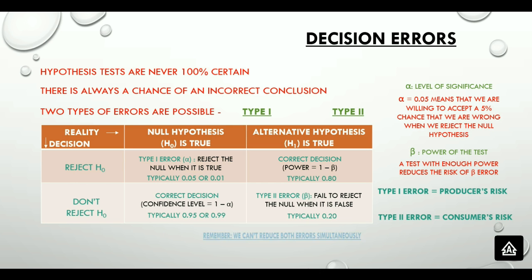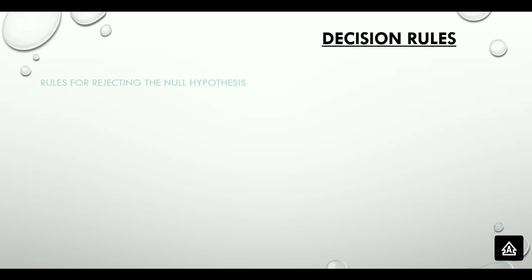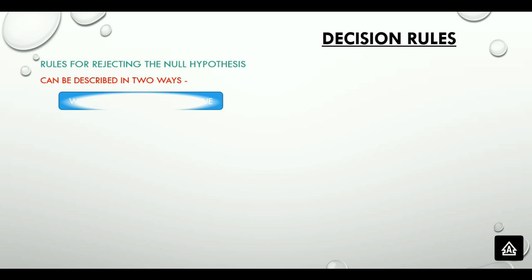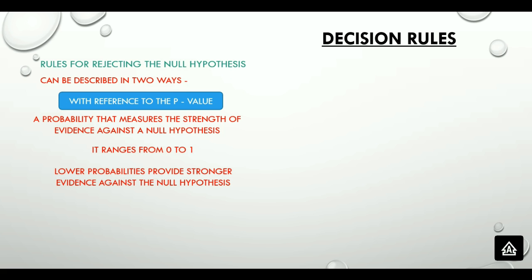Type 1 error is also known as producer's risk and type 2 error as consumer's risk. Remember, we cannot reduce both errors simultaneously. Now let's look at the decision rules for rejecting the null hypothesis. The first is with reference to the p-value, which is a probability that measures evidence against the null hypothesis, ranging from 0 to 1. Lower probabilities provide stronger evidence against the null. If the p-value is less than or equal to alpha, we reject the null; if it is greater than alpha, we fail to reject the null.